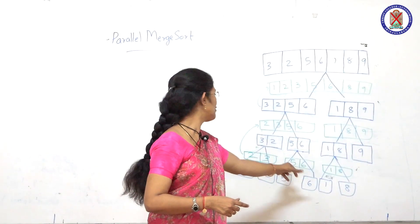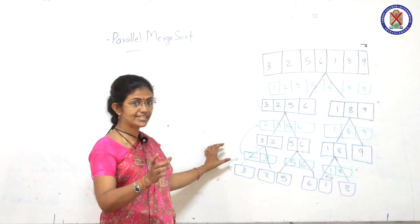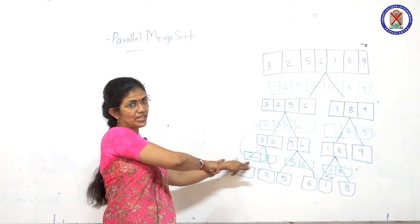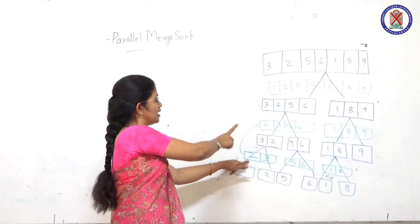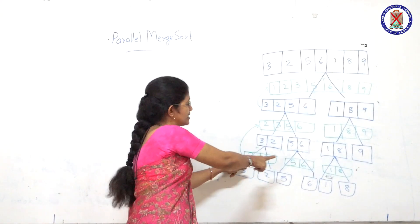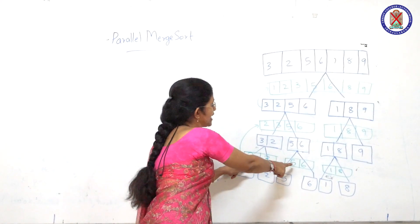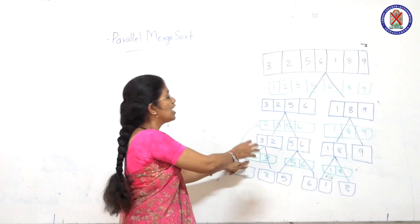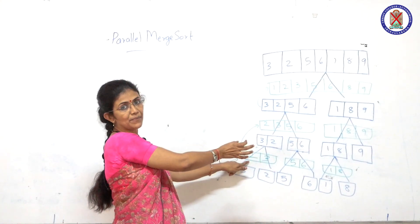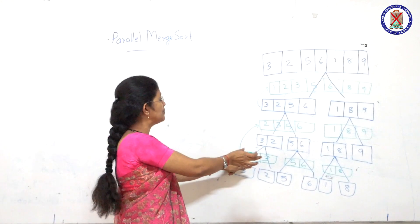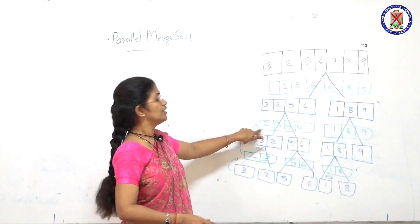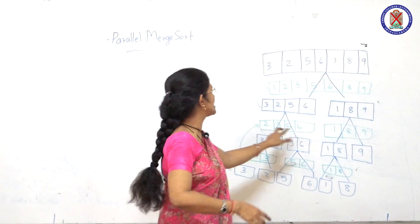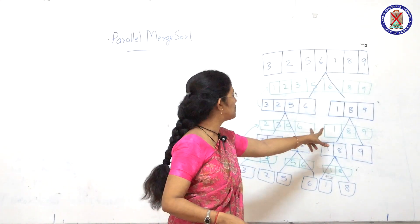With two sublists, we compare the first element of each sublist. If the first sublist has one element and the second has one element, we compare them and perform a swap if needed. Then we merge again. For sublists, we compare the first element to the first element.